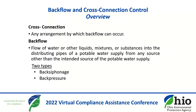Education is a big part of addressing the problem, and understanding some basic terms is important. So let's start with cross-connection. Cross-connection is any arrangement by which backflow can occur — for example, a connection between two piping systems. Backflow is essentially the flow of water or other liquids, mixtures, or substances into the distributing pipes of a public water supply from any source other than the intended source.